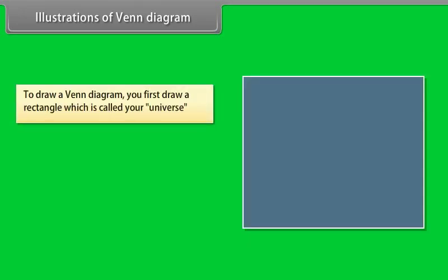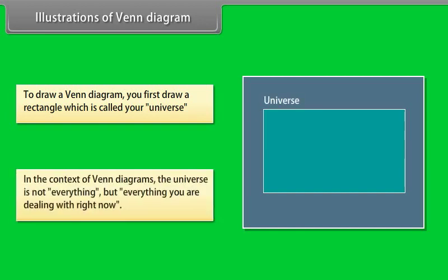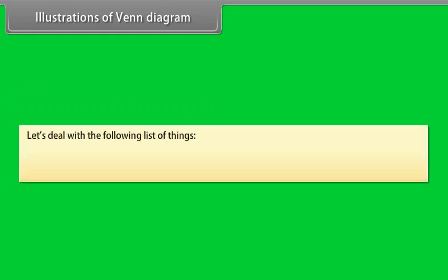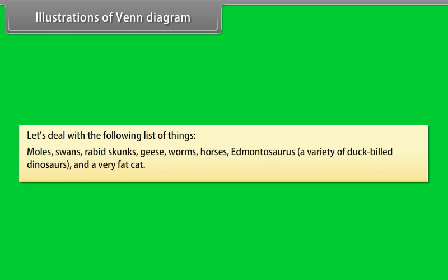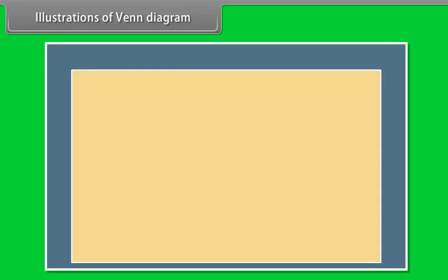A Venn diagram is constructed with a collection of simple closed curves drawn in a plane. Illustrations of Venn diagram. To draw a Venn diagram, you first draw a rectangle which is called your universe. In the context of Venn diagrams, the universe is not everything, but everything you are dealing with right now. Let's deal with the following list of things: moles, swans, rabbit skunks, geese, worms, horses, Edmontosaurus, a variety of duck-billed dinosaurs, and a very fat cat. We'll call our universe animals.